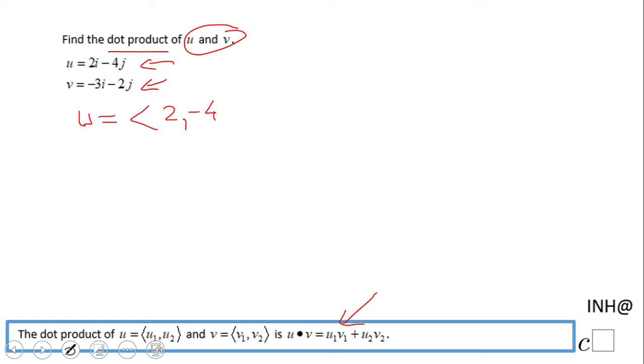And vector v is going to be <-3, -2>. So basically, this is u1, this is u2, this is v1, this is v2.